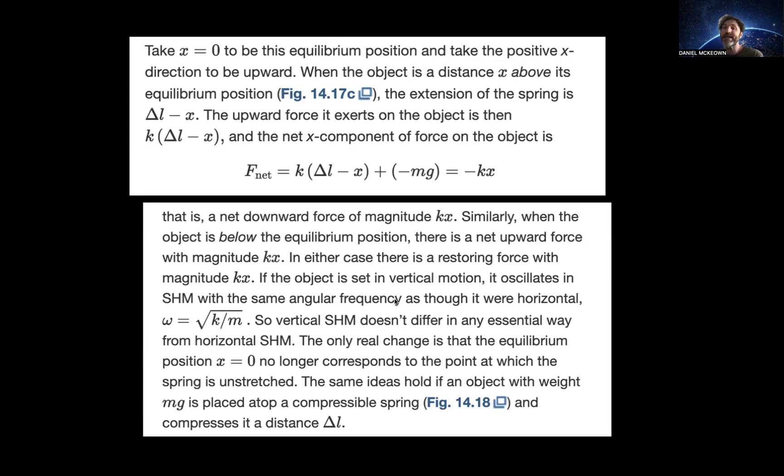Then the upward force exerted on the object is K times delta L minus X. And the net X component of the force is K times delta L minus X plus minus mg, and that's equal to minus KX. That's because now we have this additional gravitational force as part of our Newton's law. The net force is now not just equal to minus KX. It's also got this additional minus mg component.